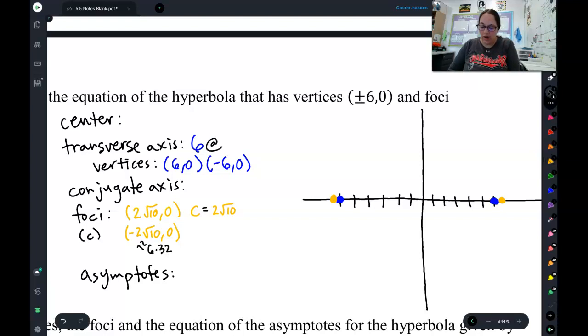I also know where my transverse axis is, it's right here, so that's going to be at y equals 0, and I know where my center has to be, because it has to be symmetric, so my center has got to be at 0, 0.